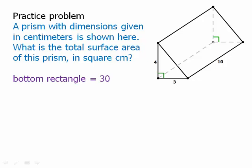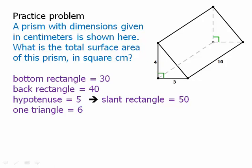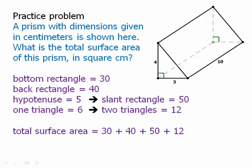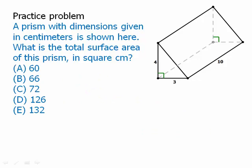The bottom rectangle: three times ten is thirty. The back rectangle: four times ten is forty. We know that hypotenuse is five — it's a 3-4-5 triangle — so that slant rectangle is five times ten, which is fifty. Those are all three rectangles. We already figured out that the area of one triangle is six, so two triangles is twelve. Now we just add all together: thirty plus forty plus fifty plus twelve equals one hundred and thirty-two. So the surface area is one hundred and thirty-two.